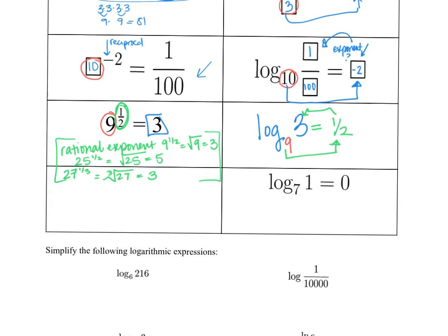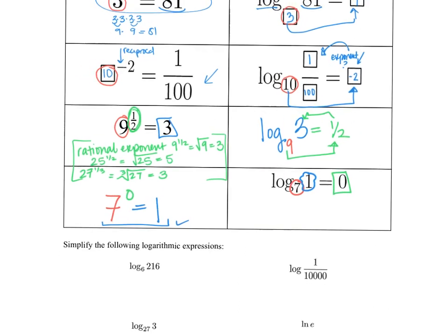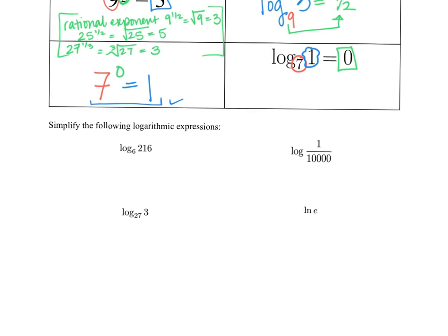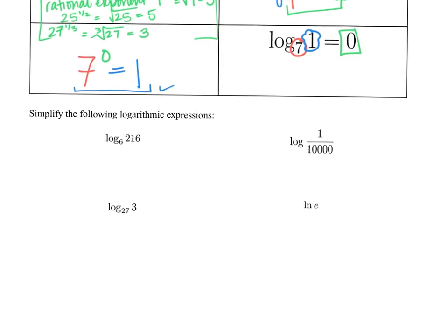Going the other way, here's the base, the log is always equal to the exponent, and we know the answer is the argument. Reading the sentence: 7 to the 0 power equals 1, which we know is true. We have a few problems down here to simplify — you should pause and try these before moving on.